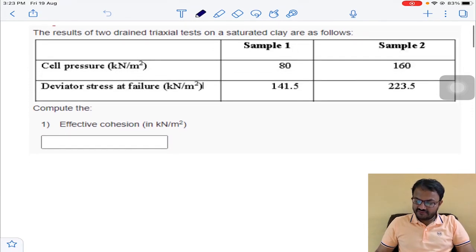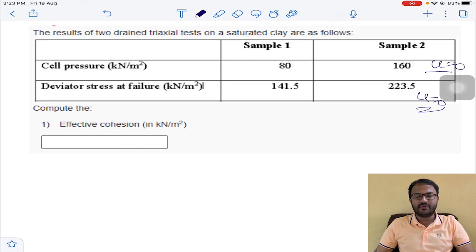The results of two drained triaxial tests on a saturated clay are given. Drained triaxial test means there is no pore water pressure. For both samples, u is equal to 0. In this test, total stress analysis and effective stress analysis are one and the same. You need to remember that point.